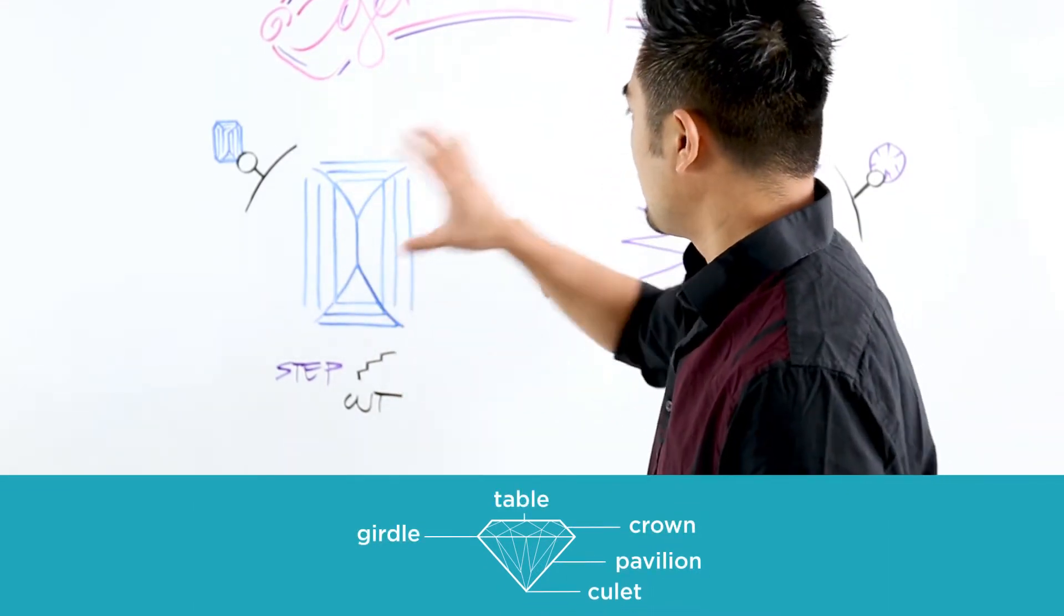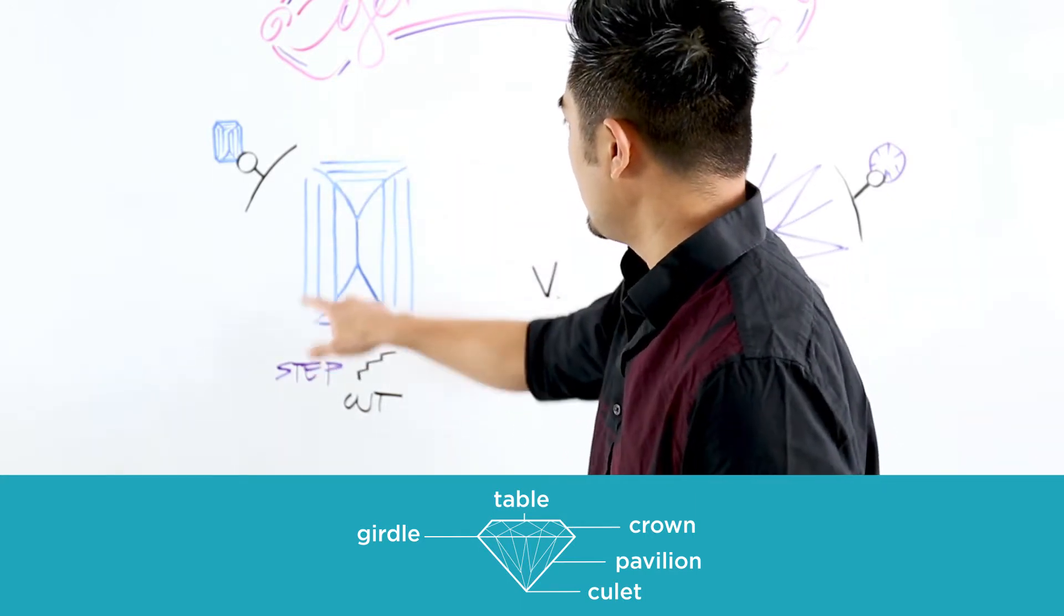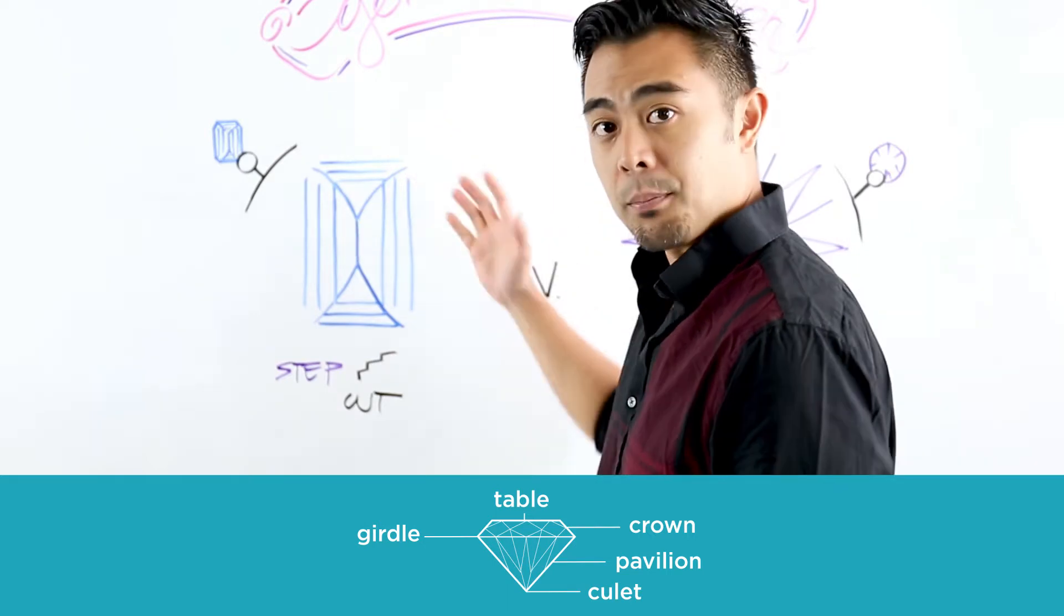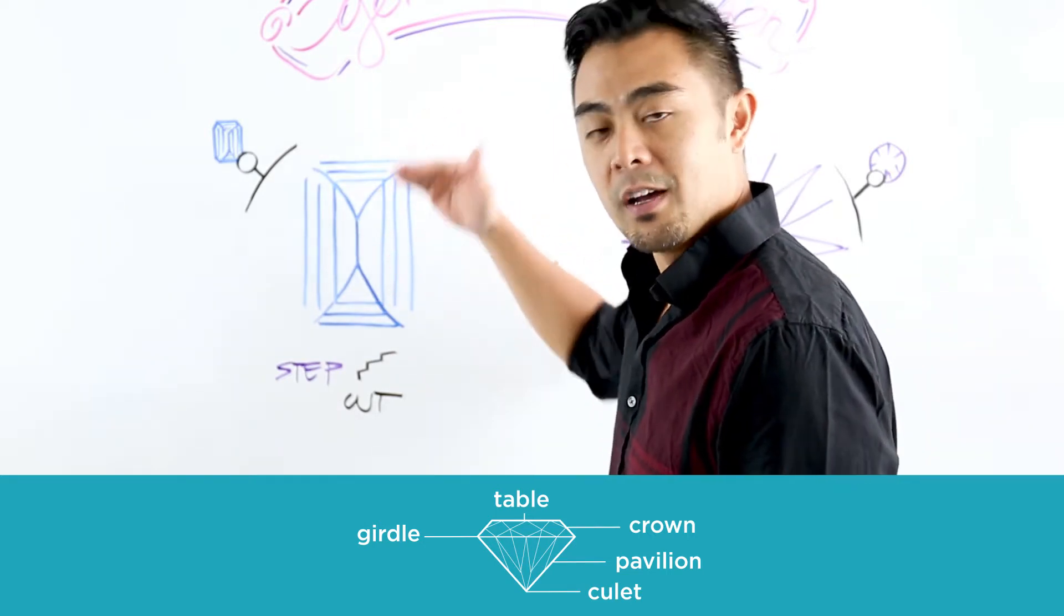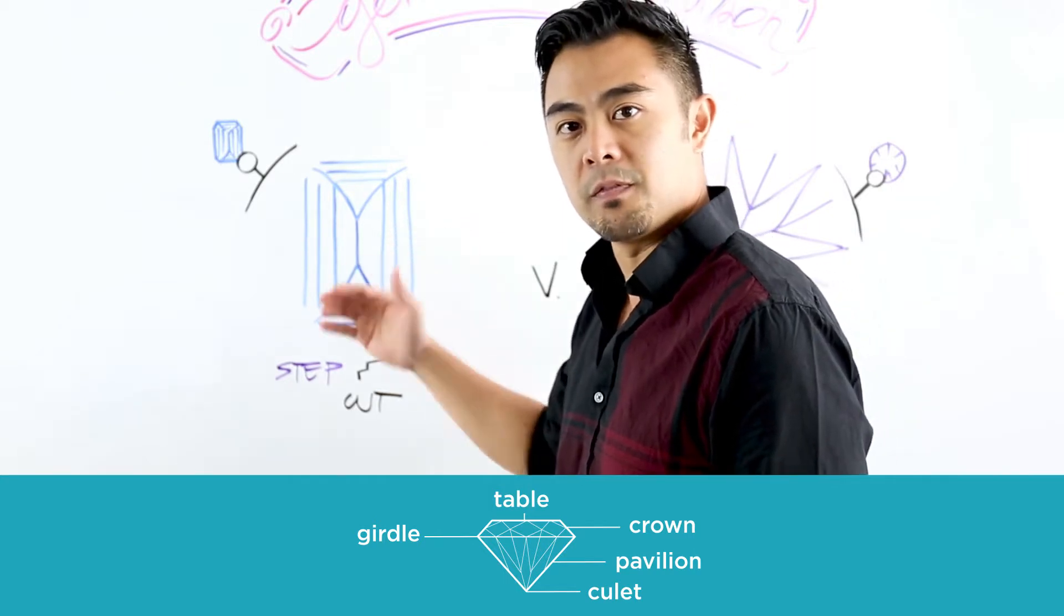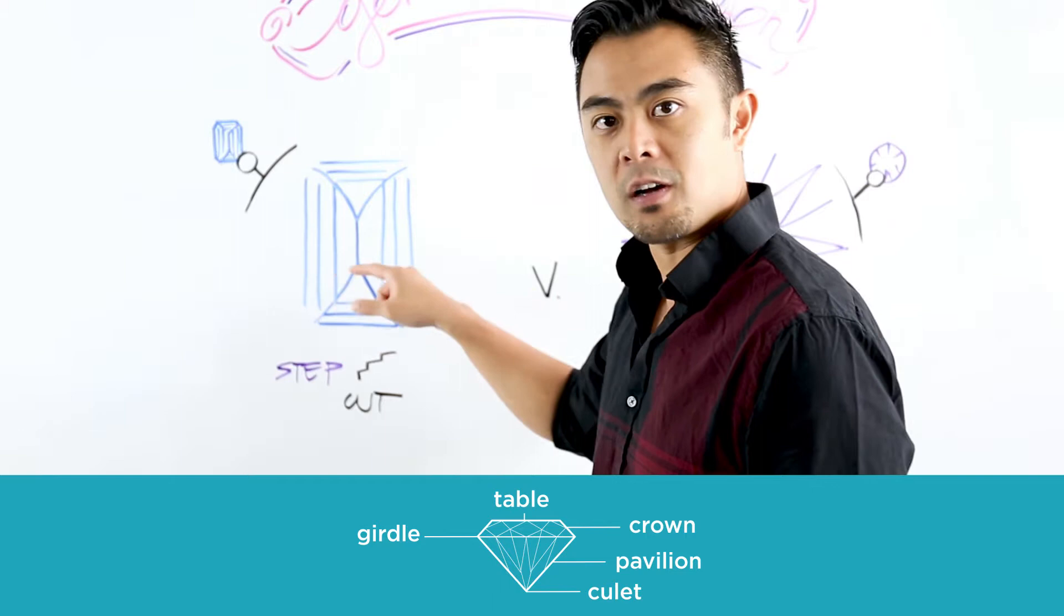So the girdle, when you're looking at a gemstone, the circumference on the gemstone, there's a little section between the top part and the bottom part of the gemstone. The whole top part of the gemstone is called the crown, the bottom part is called the pavilion, and the circumference, the little area that goes around, is called the girdle.